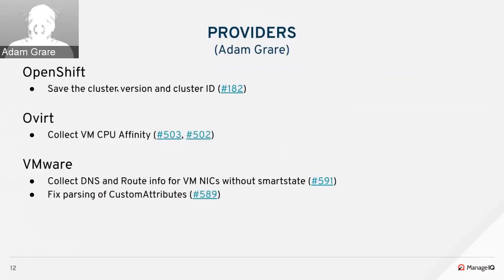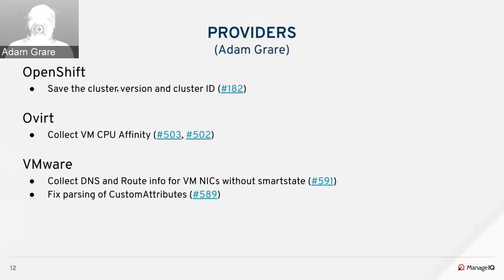On OpenShift, we saved the cluster version and the cluster ID, which helps us differentiate between version 3 and version 4 clusters. Those properties are set to the API version and the uid_ems on the EMS management record for OpenShift.